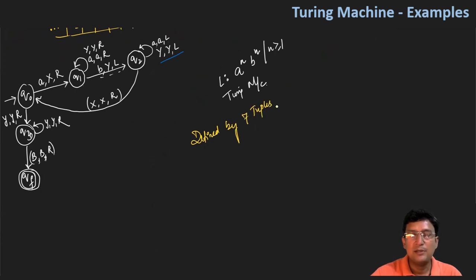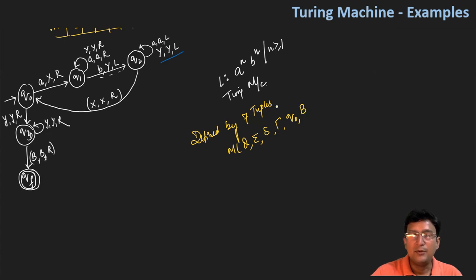So what are those tuples? These tuples have: the set of all states Q, then the input alphabet set, the transition function, tau which denotes the tape alphabet, Q0 which denotes the initial state, then a blank symbol for the tape blanks, and the set of final states.